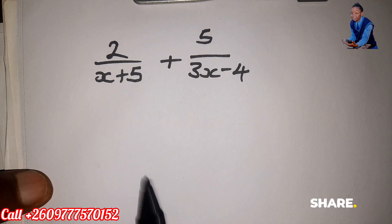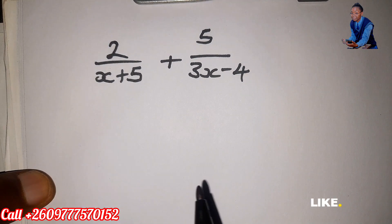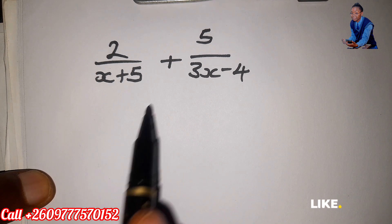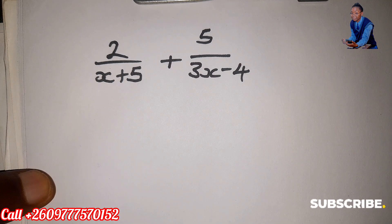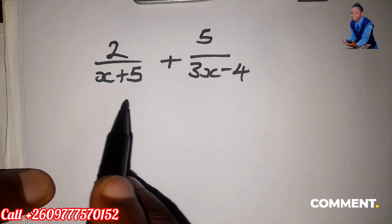Okay, so what you need to do, since these two fractions are separated by a plus sign here, it means that you need to find the lowest common multiple of x plus 5 and 3x minus 4.